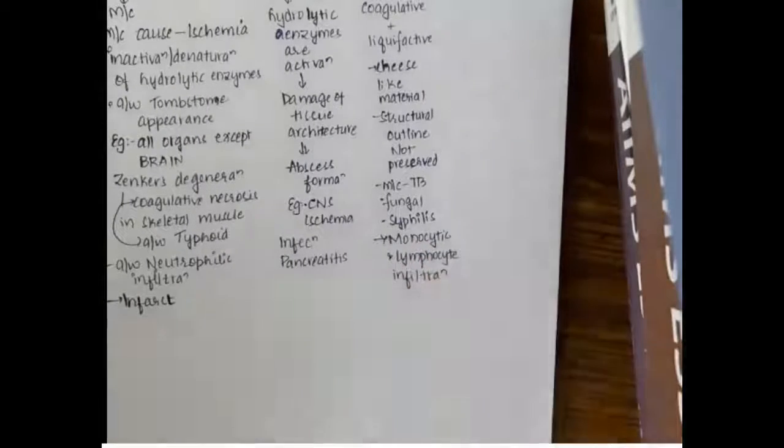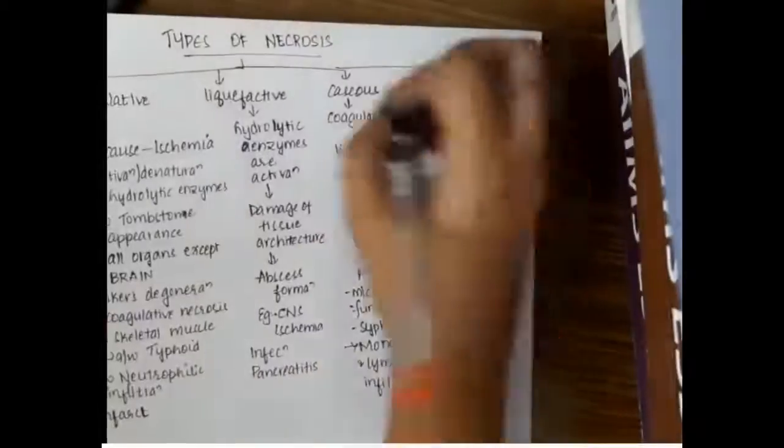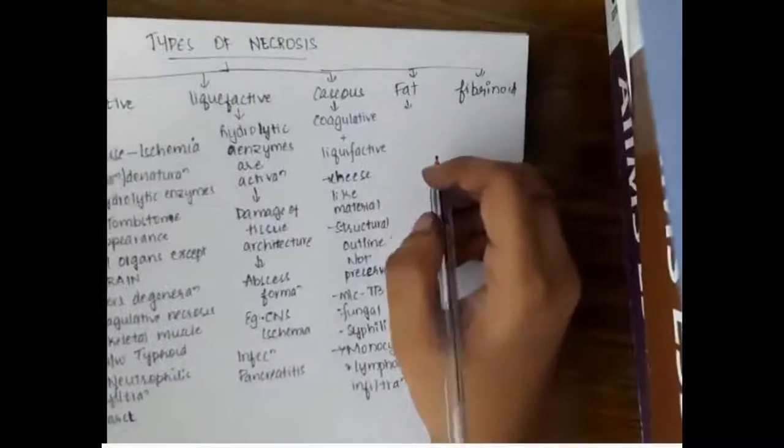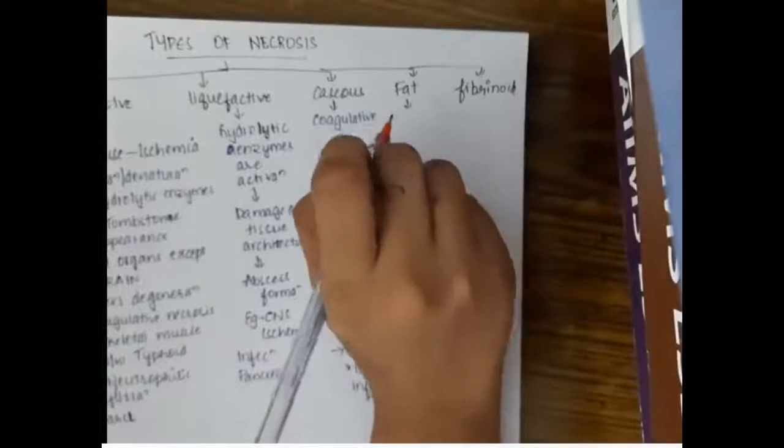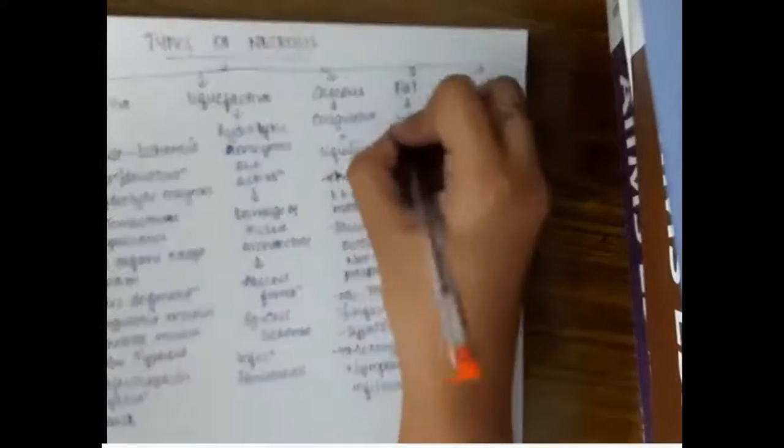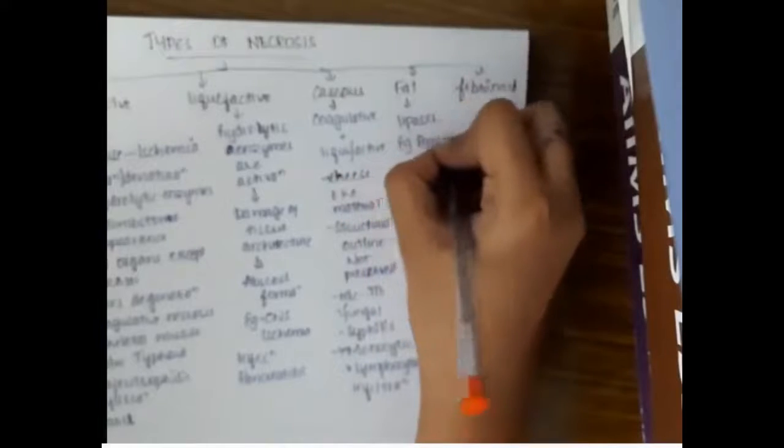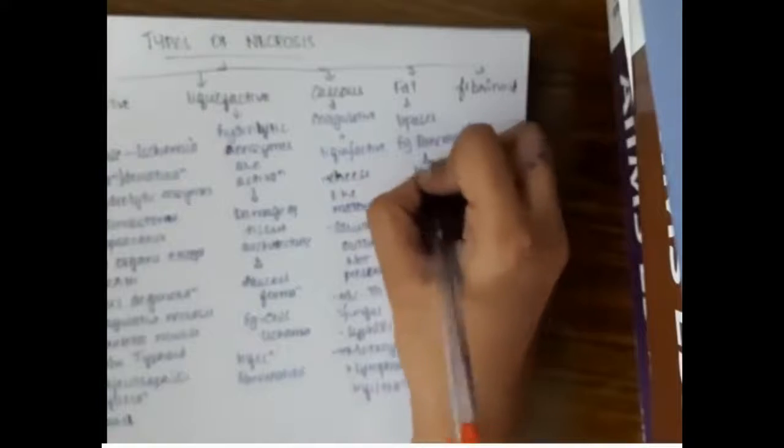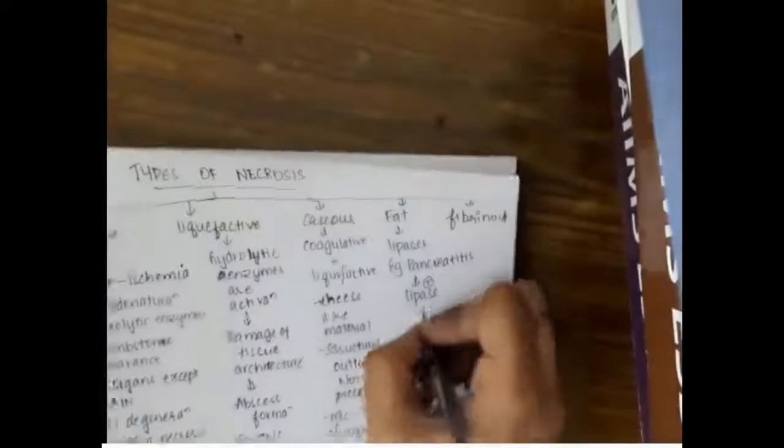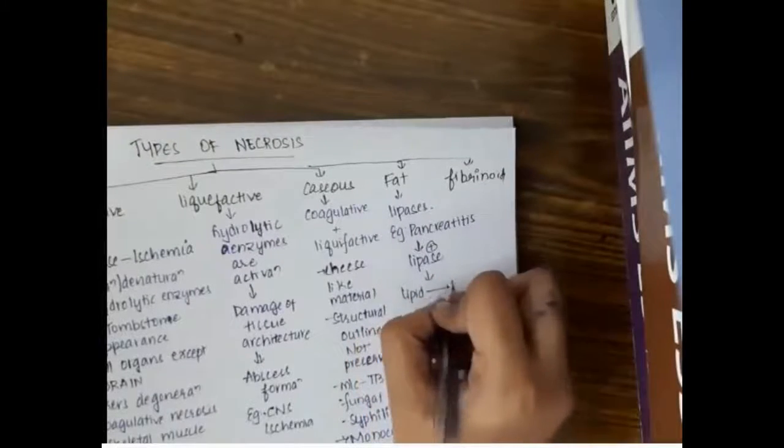The fourth type of necrosis is fat necrosis. This fat necrosis occurs due to lipases in pancreatitis. In pancreatitis, lipase is released out of the pancreas and will convert the lipid of omentum to fatty acid.